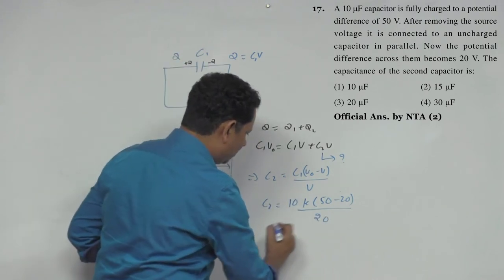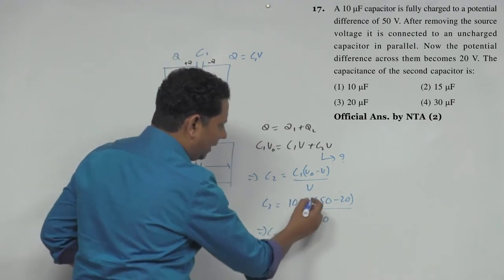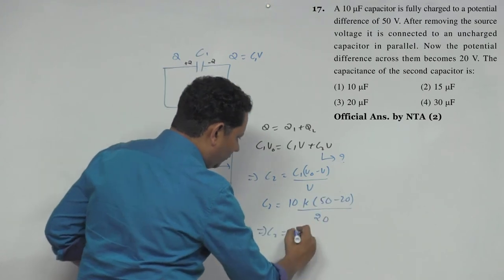इसमें value रखें, आपके C2 की value आ जाएगी. तो C1 जो है वह आपका 10, then 50 minus 20 divided by 20. So which implies जो C2 है आपका, इसकी value आ जाएगी 30 divided by 2, which is 15.